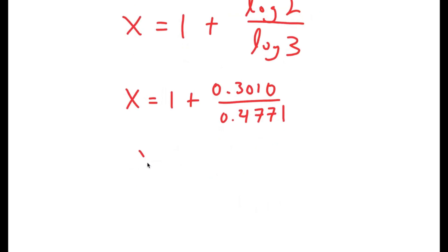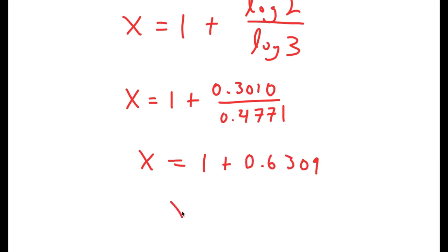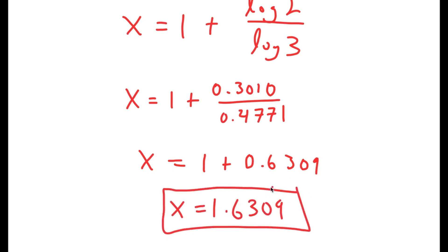Dividing these two values, I get x equals 1 plus 0.6309, meaning x is equal to 1.6309. So this is my answer.